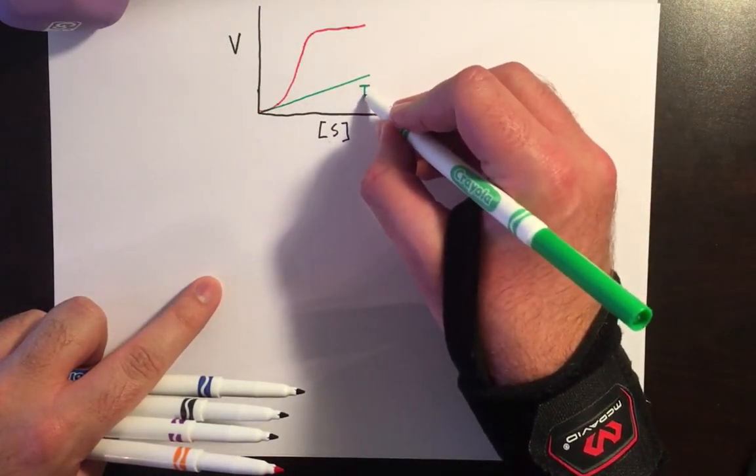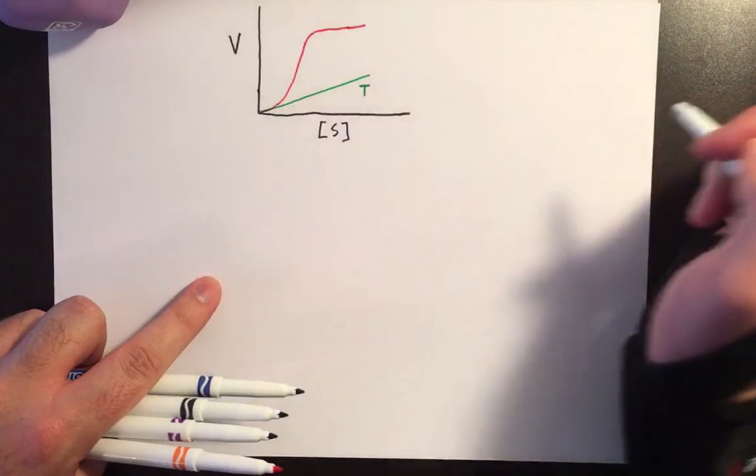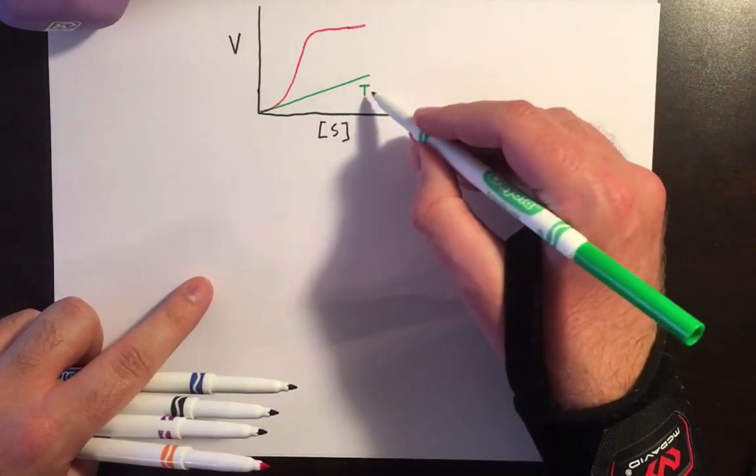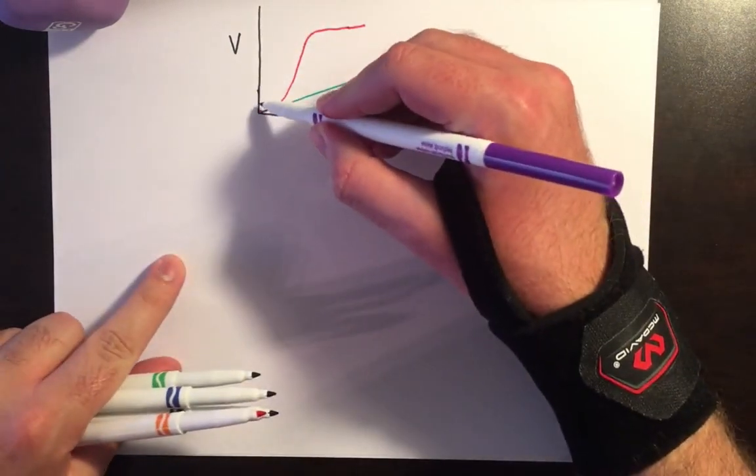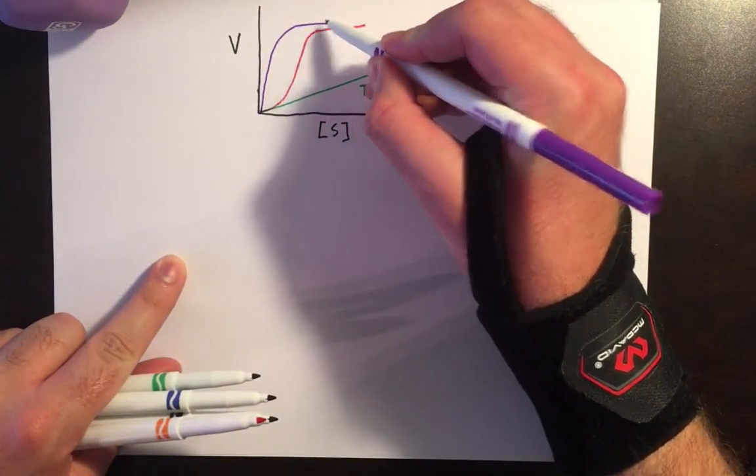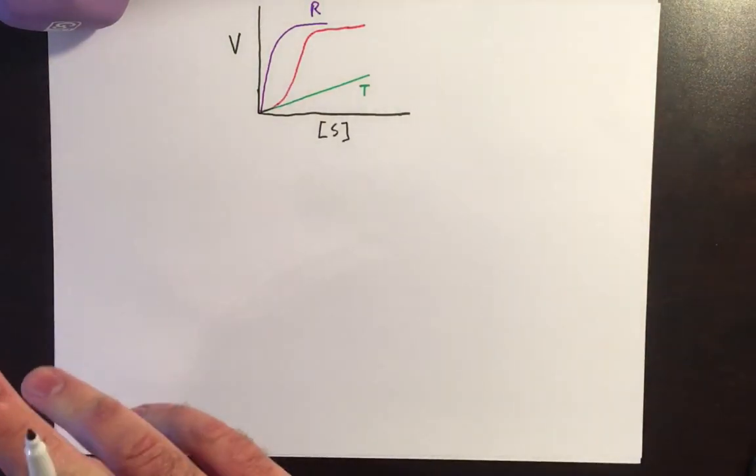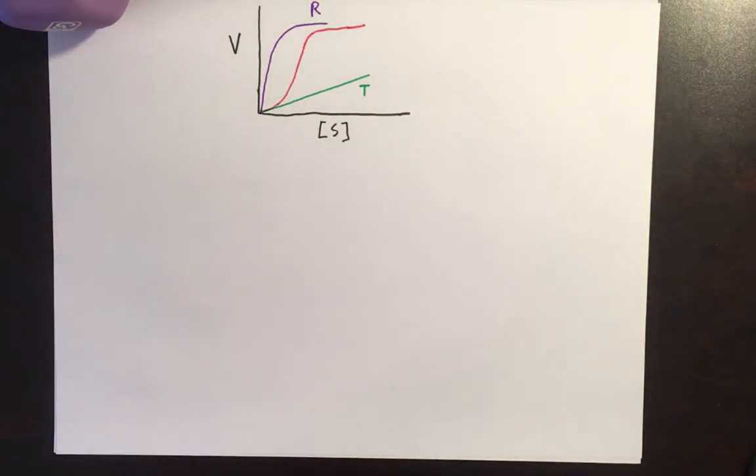The first is the T-state, which is just a linear straight line here. This is what we get if we keep it locked in the T-state. And if we were to graph the R-state, that is much more hyperbolic-like, much more Michaelis-Menten in nature.